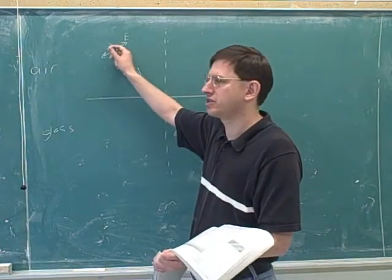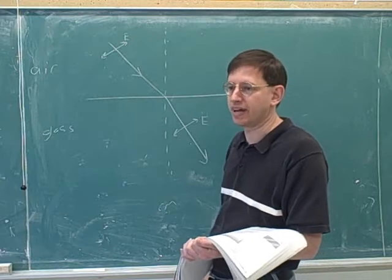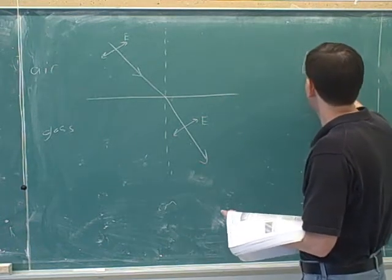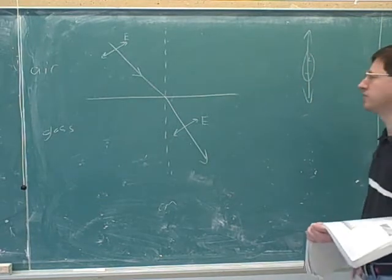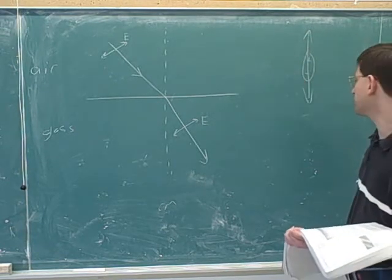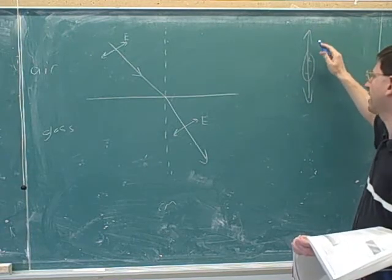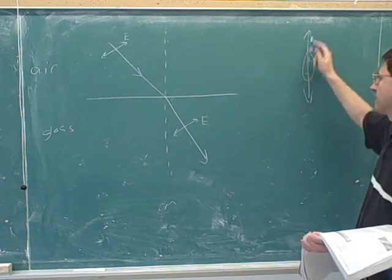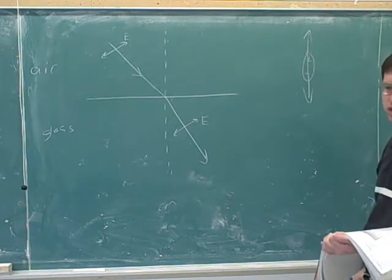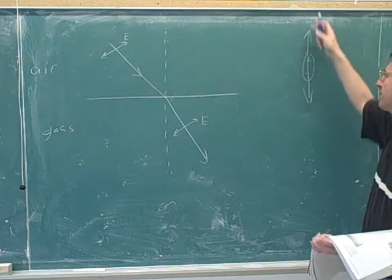Where are these electric field oscillations coming from? They can come from oscillating molecular dipoles — oscillating charges inside the substance. If we have a dipole that's oscillating up and down, it's going to generate electromagnetic waves. An important point is that the EM waves spread out from the dipole in all directions except the direction of oscillation. There will be no EM waves spreading out in the same direction as the oscillation. The EM waves propagate to the sides, but not directly in the direction of oscillation.